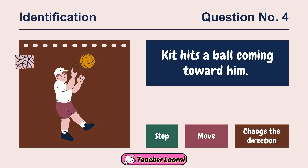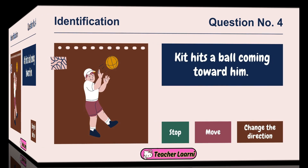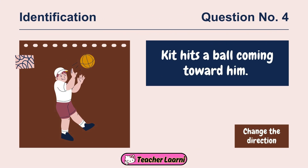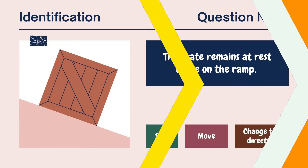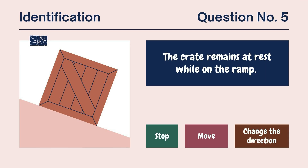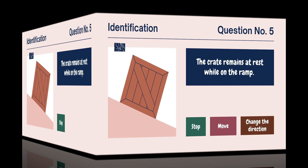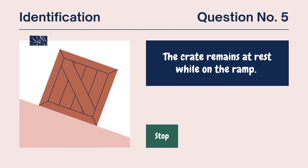Question number 4: Kit hits a ball coming toward him. What will happen to the ball? The ball will change direction. For our last question: the crate remains at rest while on the ramp. What will happen to the crate? The correct answer is stop. Comment down below your score.